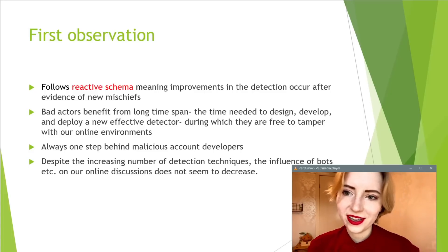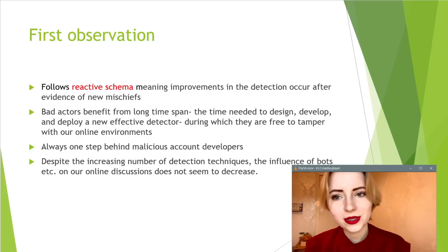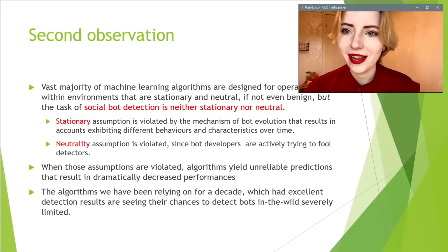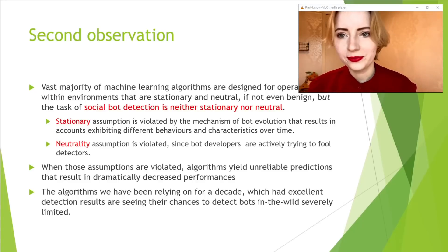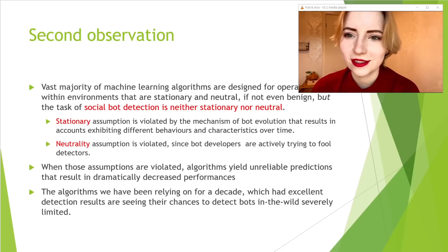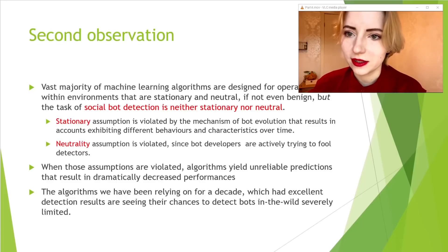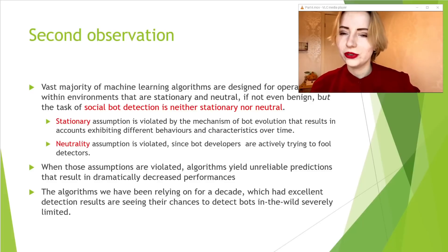Despite increasing techniques, bots don't seem to decrease online. Machine learning algorithms are usually based on neutrality and stationarity assumptions, which social bots violate. Neutrality is violated because social bots are actively trying to fool detectors. Stationarity is violated because bots don't show the same characteristics over time, meaning the same algorithms we've relied on for the last decade will not necessarily prove useful for future bots.